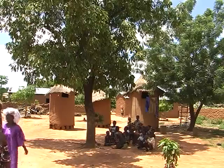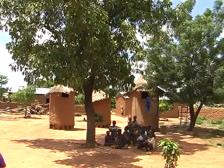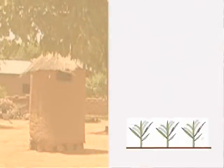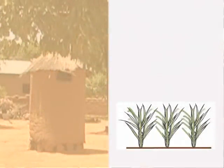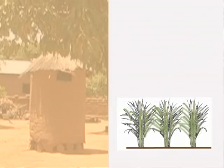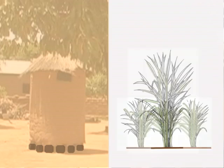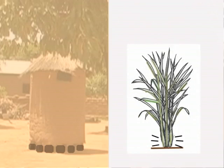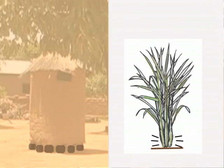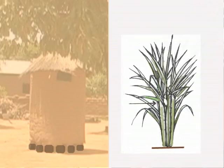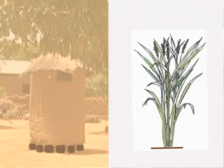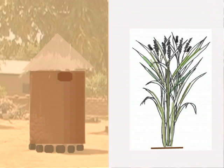We can compare the development of the rice plant with the construction of a granary. Rice plants first go through a vegetative phase, producing leaves and tillers. This period of horizontal growth is like building the foundation of the granary. Next, during the so-called vertical growth, rice plants produce panicles and start flowering. We can compare this phase with the construction of the walls and the roof of the granary.